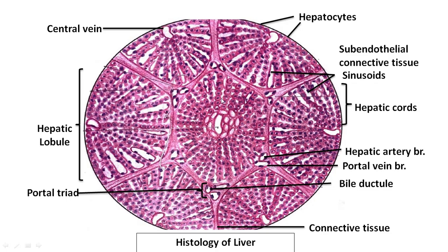If there is any toxic injury to the hepatocytes, these Ito cells or hepatic stellate cells will undergo rapid mitosis to give rise to connective tissue fibers, resulting in fibrosis of the liver, termed cirrhosis. Hepatocyte damage is initially replaced by neighboring hepatocytes, but if the damage is so severe that neighboring hepatocytes cannot compensate, the Ito cells replace them with connective tissue fiber, which is called fibrosis or cirrhosis.